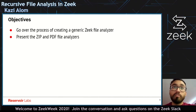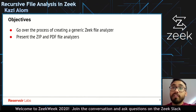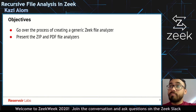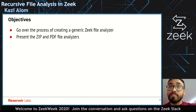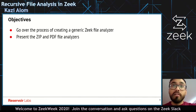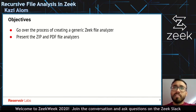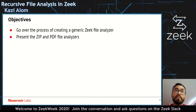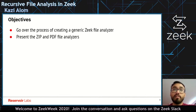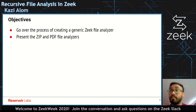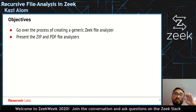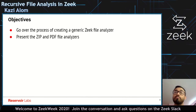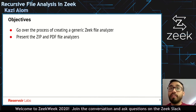Today I will be going over the process of creating a generic Zeek file analyzer. I'll be talking about the specifics of how you want to organize your source code, how you want to organize your imports, so you can basically make any kind of file analyzer for any extension. Secondly, I will present a zip and PDF file analyzer that I've been working on, and I'll show you what those logs look like when you process PCAPs with zip and PDF traffic in Zeek.